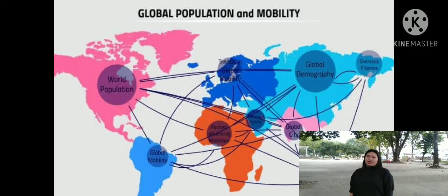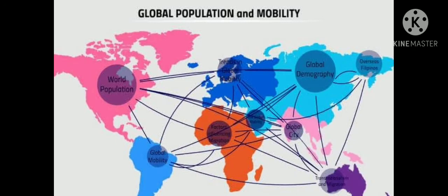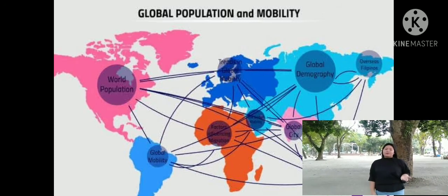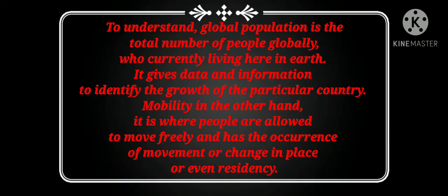Global population and mobility — it is a geographic mobility which measures how population and goods move over time. It is a measure of the globally mobile population with a volume of movements on a large scale. Global population is the total number of people globally who are currently living on Earth. It gives data and information to identify the growth of a particular country. Mobility, on the other hand, is where people are allowed to move freely, with the occurrence of movement or change in place or even residency.